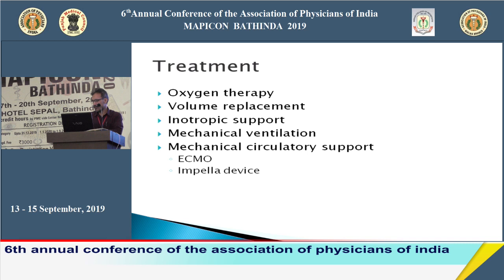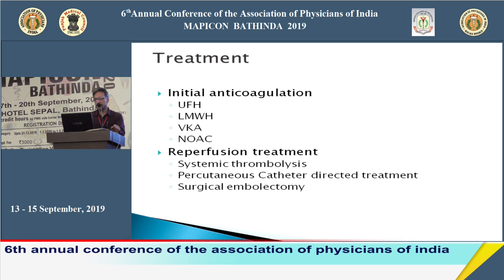Main treatment: unfractionated heparin should be given immediately when pulmonary embolism is suspected — even before shifting the patient for investigation. Once pulmonary embolism is confirmed, reperfusion therapy is the treatment of choice, including systemic thrombolysis, percutaneous catheter-guided treatment, or surgical embolectomy.